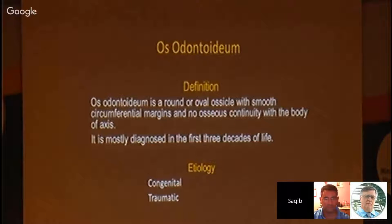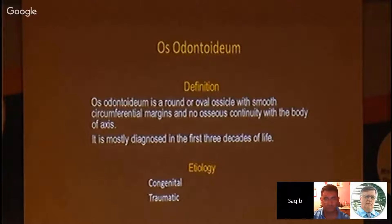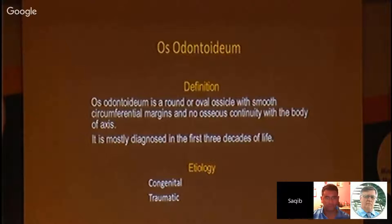Etiology may be congenital or traumatic. Probably the traumatic origin means an odontoid fracture happened many years before and was not diagnosed properly, and by the time we assume it is a congenital disease. Although there are some publications trying to differentiate congenital from traumatic origin of os odontoideum, it does not make much difference.